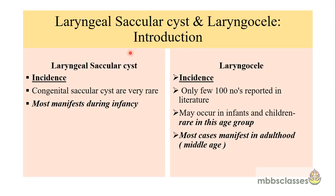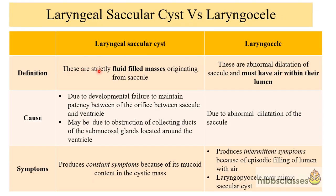The laryngeal saccular cysts and laryngoceles share the same site of origin but have certain differences. Laryngeal saccular cysts are very rare in occurrence, but when they occur they most often manifest during infancy. Laryngoceles, by contrast, have only a few hundred cases reported in literature and are extremely rare in infants and children, manifesting mostly in adulthood during middle age. By definition, saccular cysts are strictly fluid-filled masses originating from the saccule, while laryngoceles occur due to abnormal dilatation of the saccule and must contain air within their lumen.